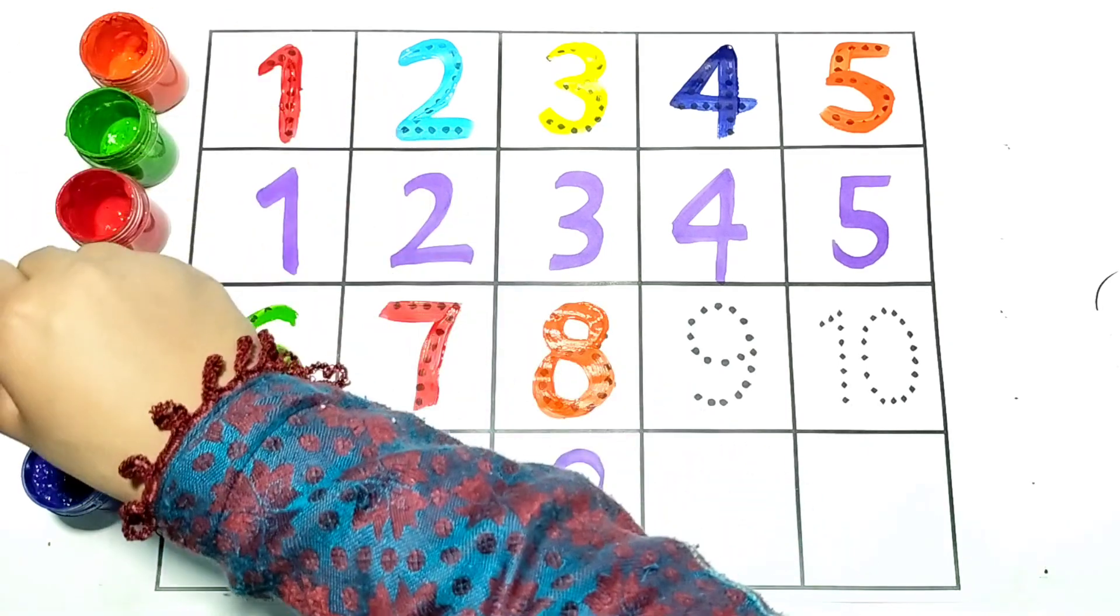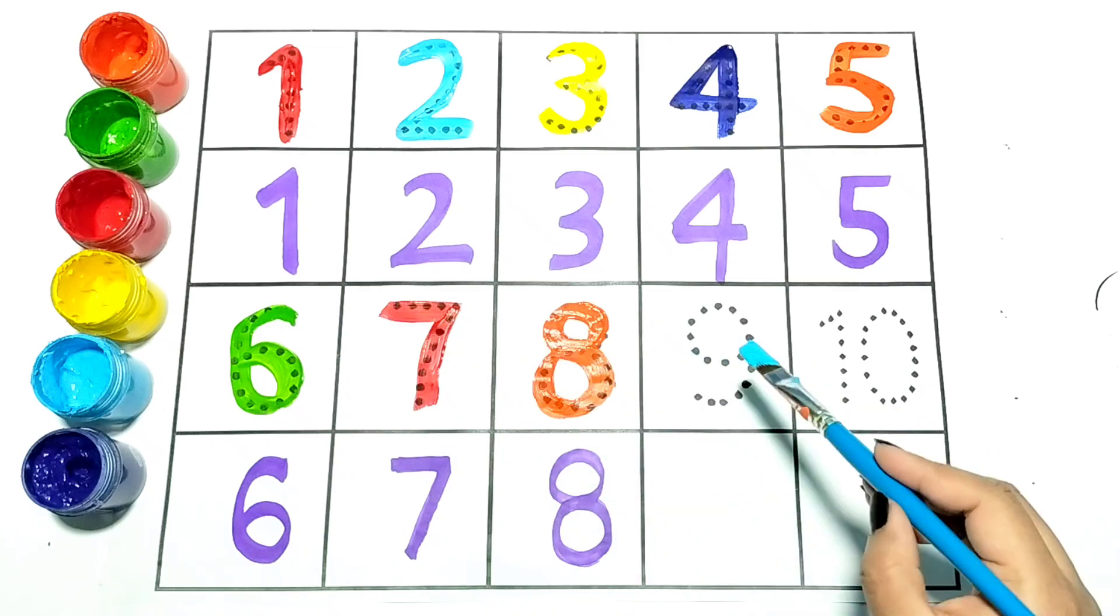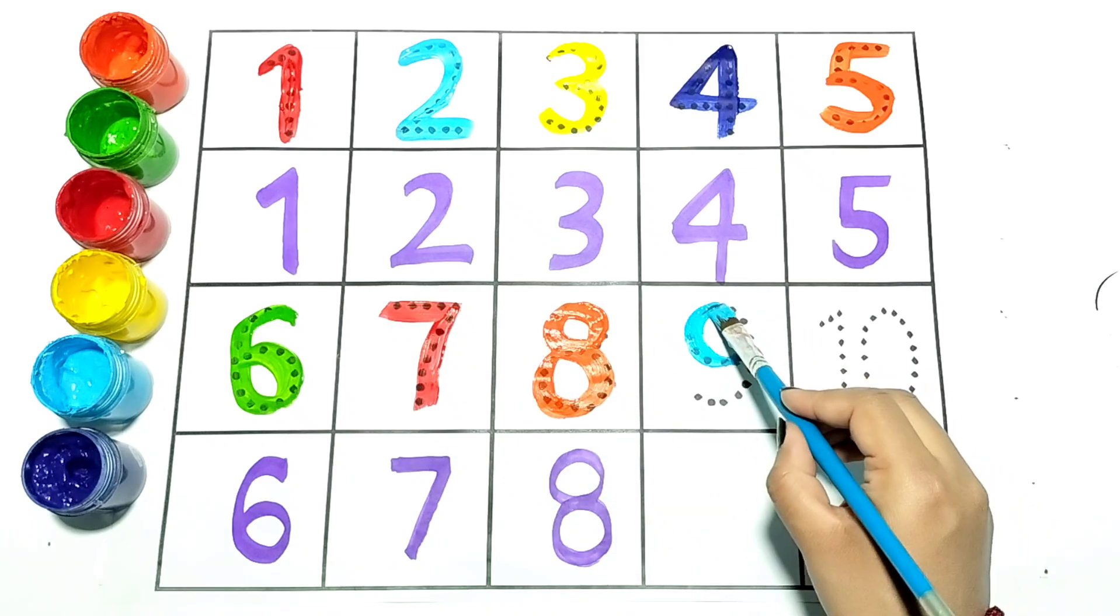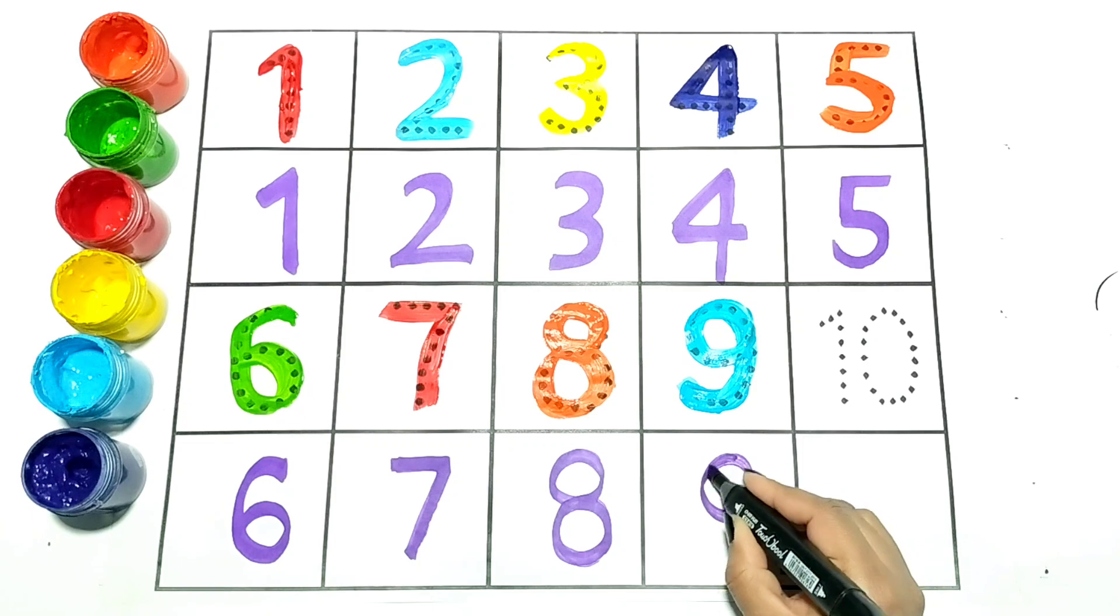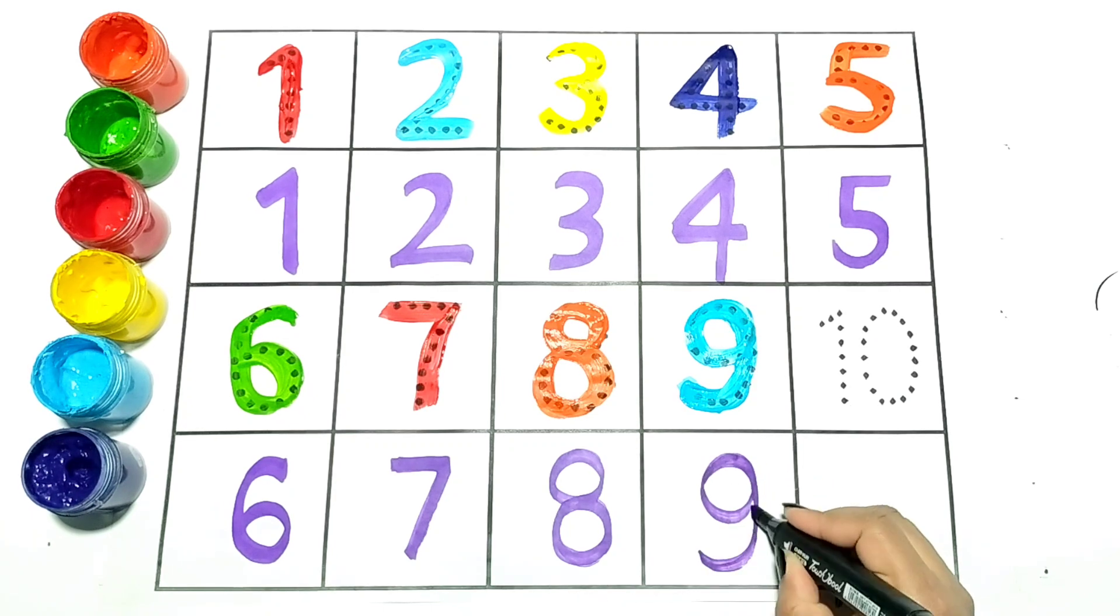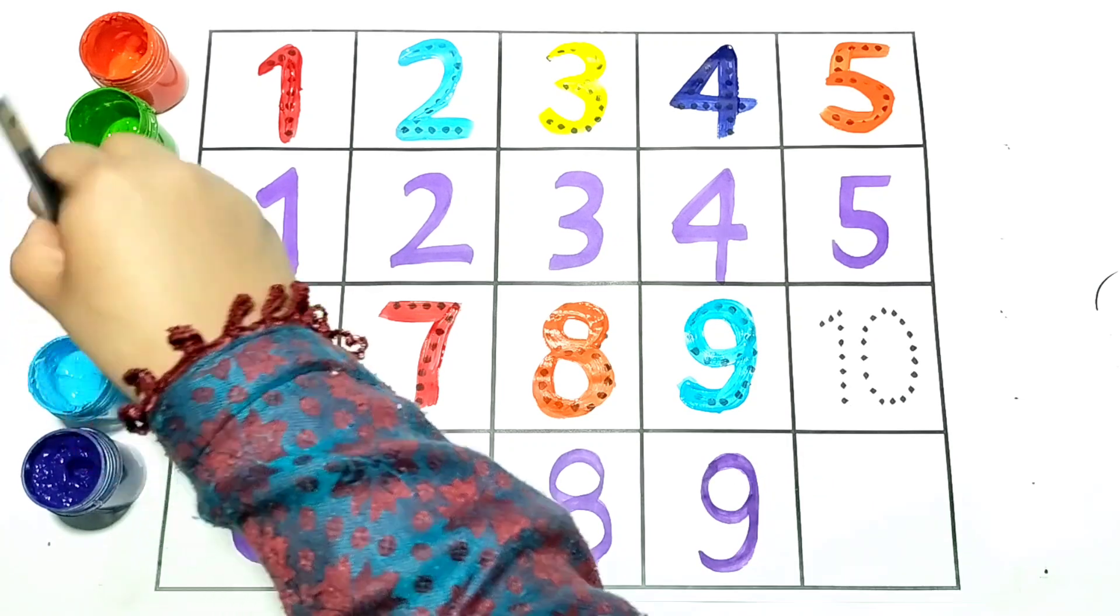Nine. Now I am writing nine. It is in blue color. Next number is ten.